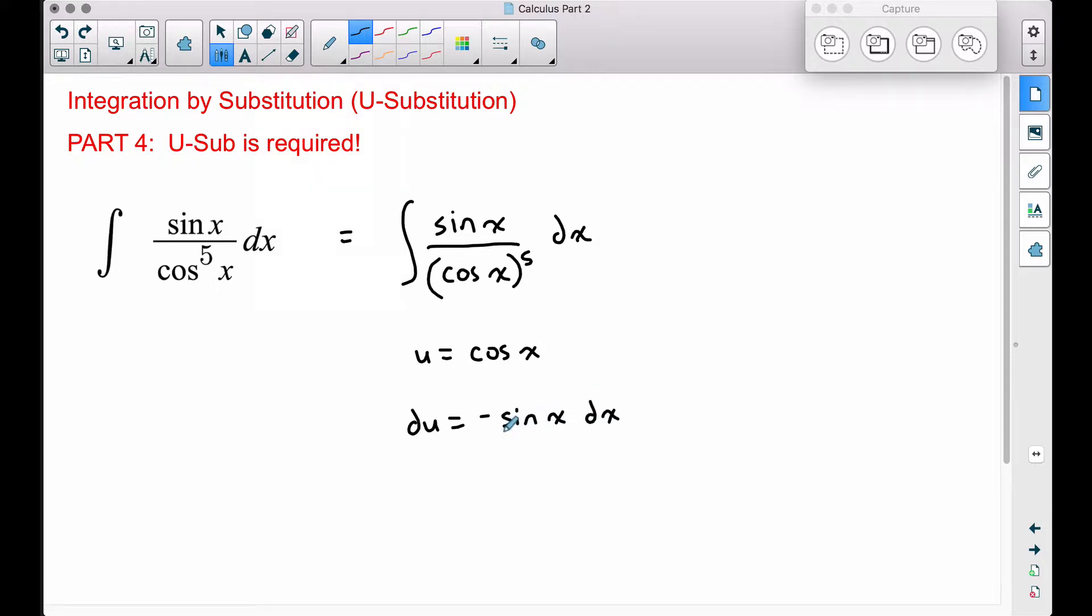Now, you may wonder, what do we do with this negative? We can divide both sides by negative 1, giving us negative DU is equal to sine of X DX. And to see what's going to happen here, the U is going to completely replace the cosine, so we're going to have U to the fifth at the bottom, and this negative DU is going to replace sine of X DX.